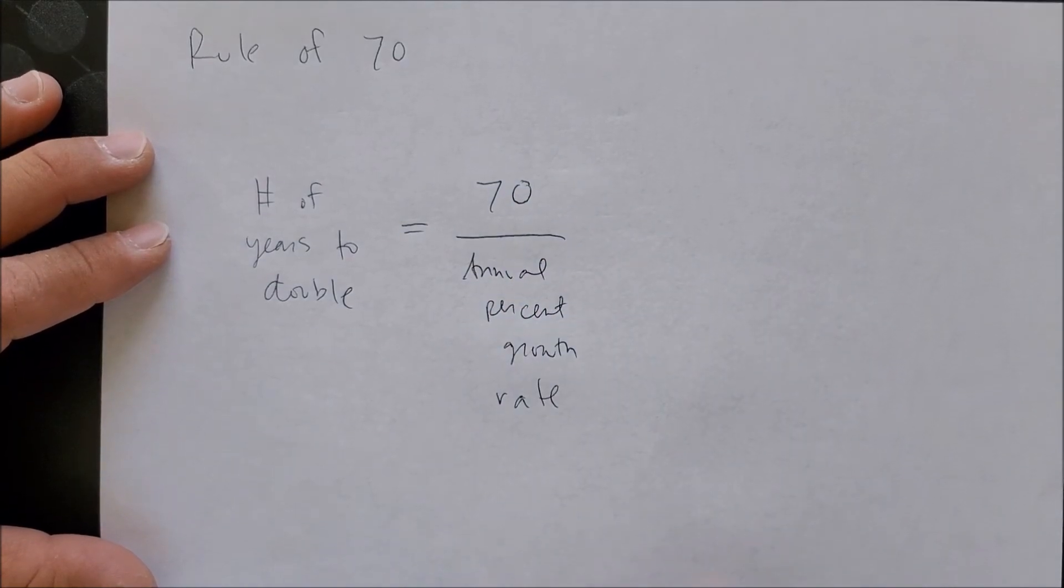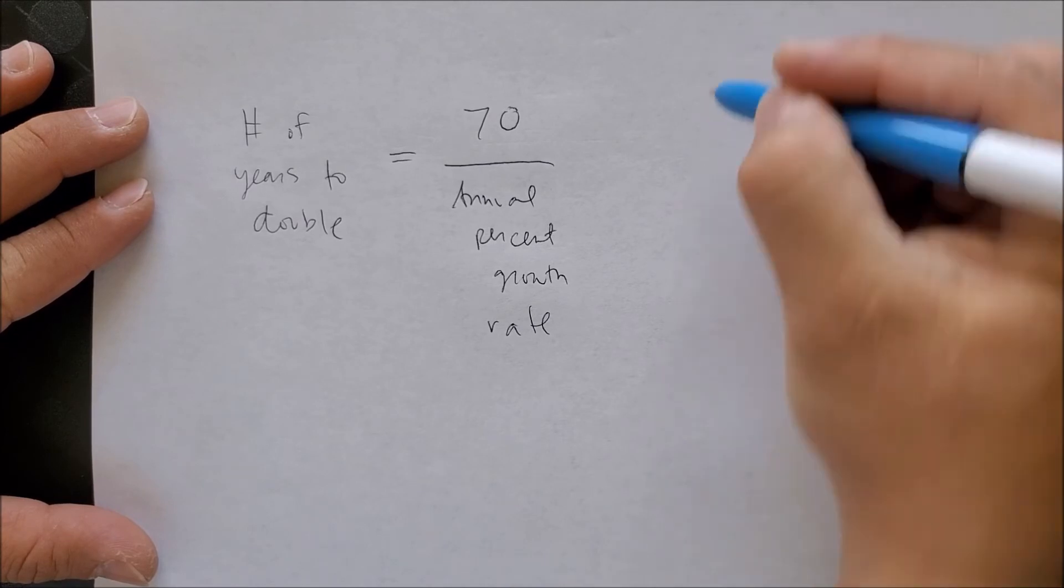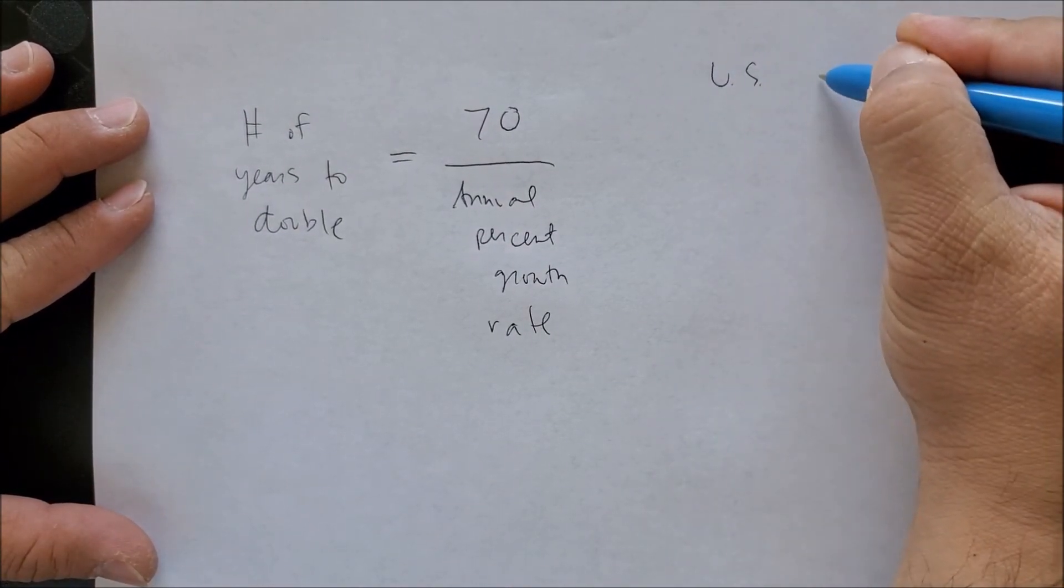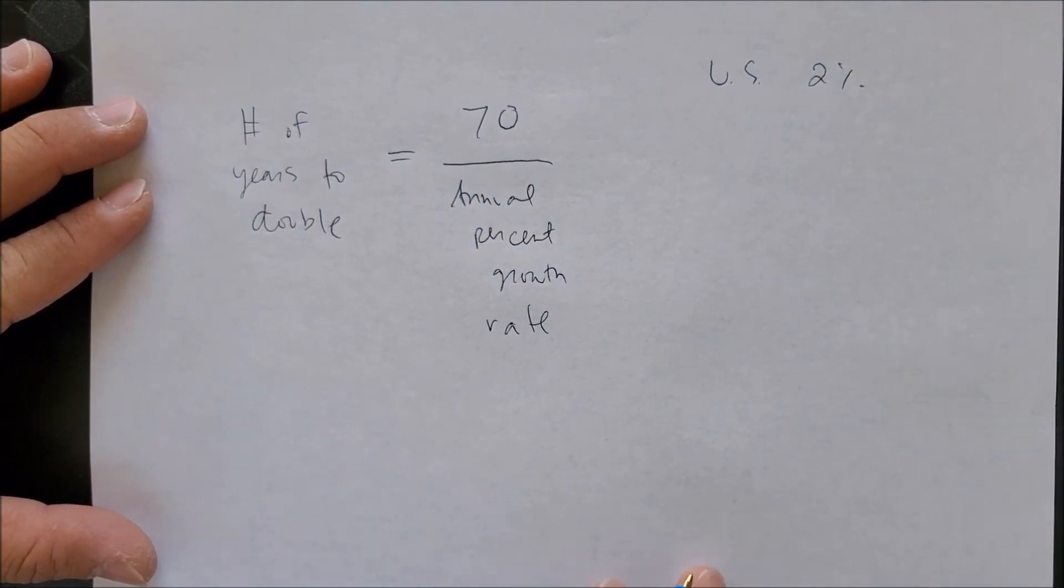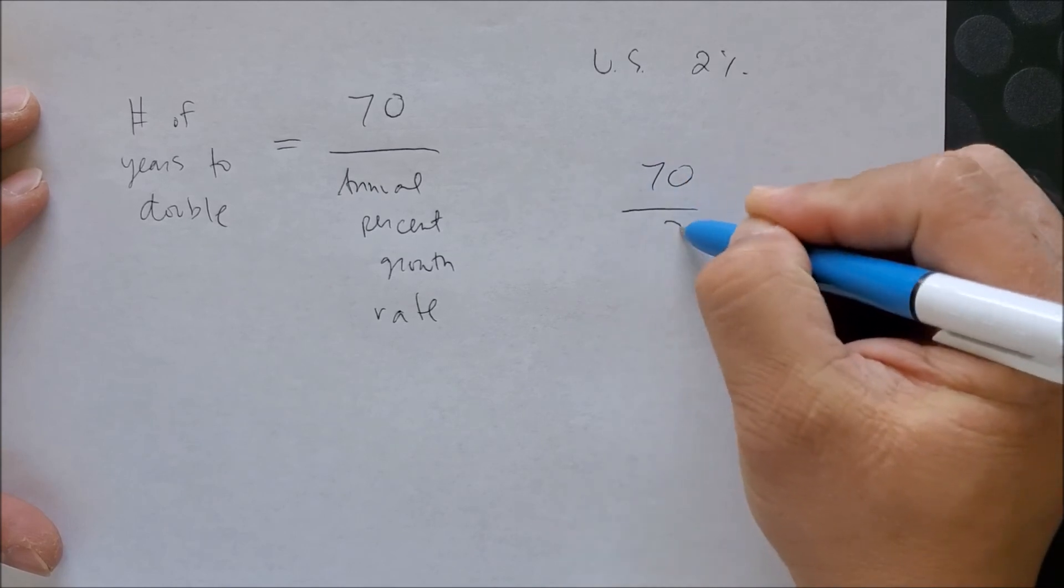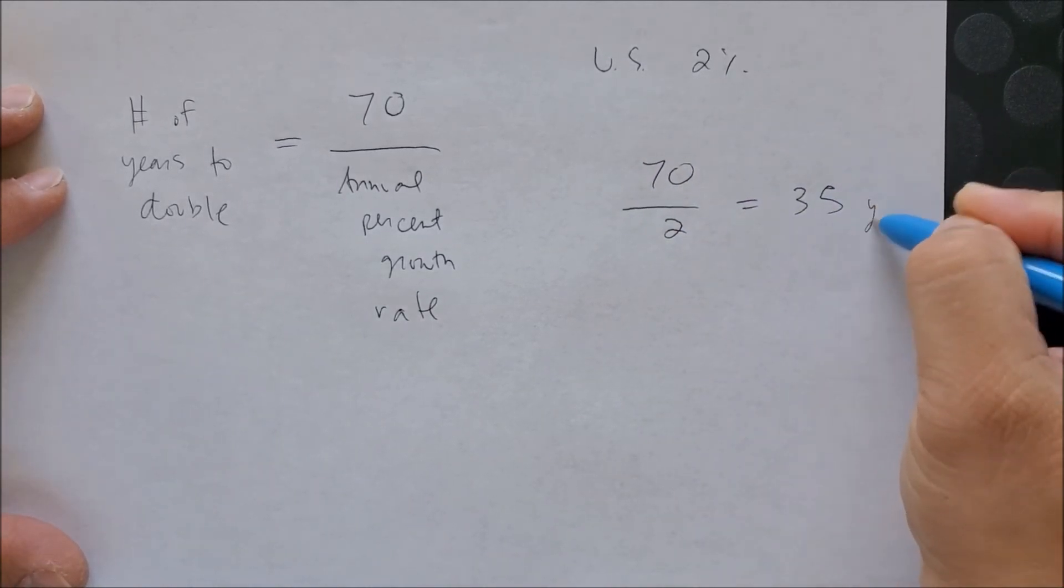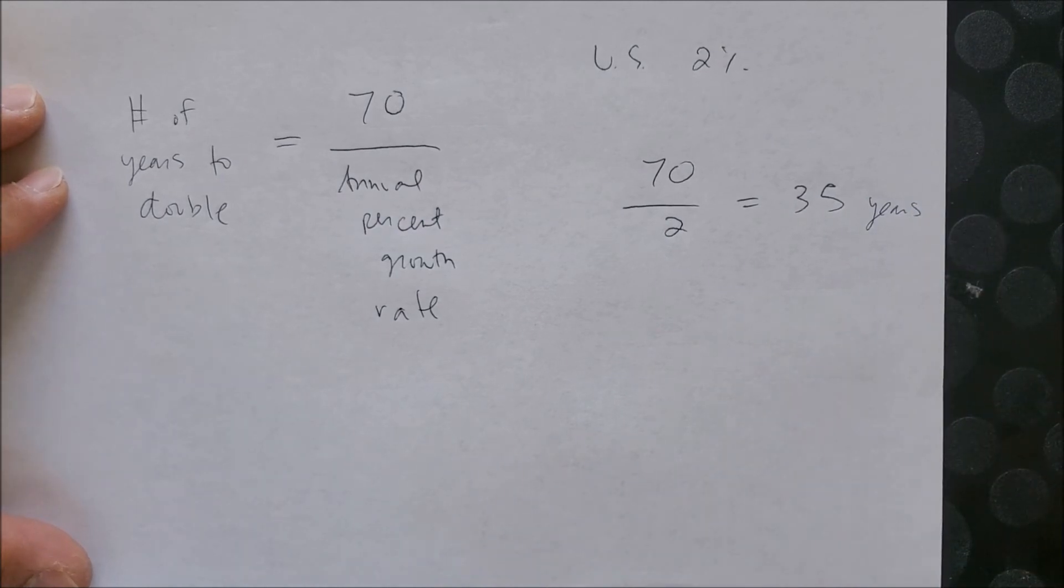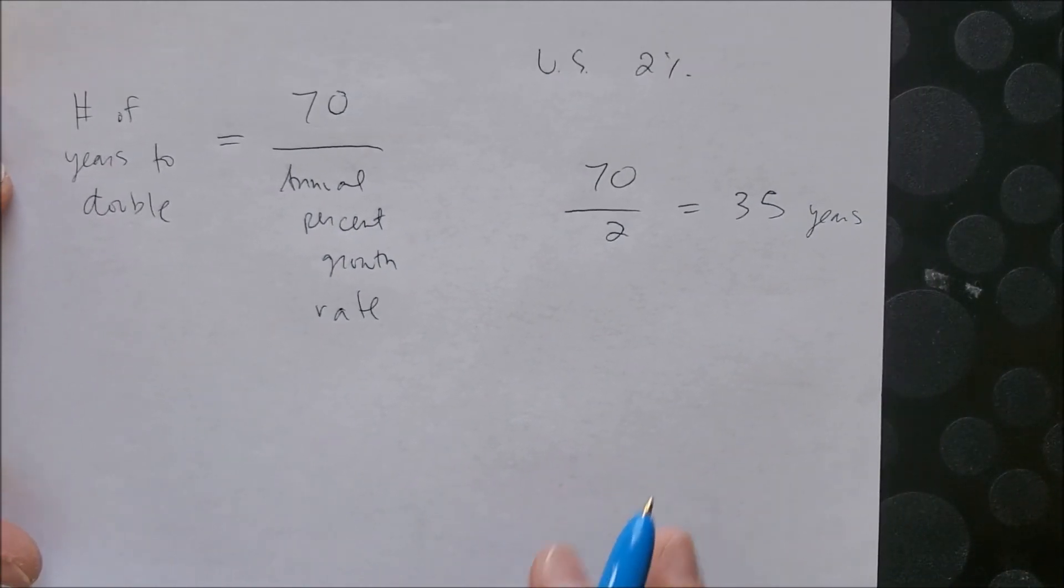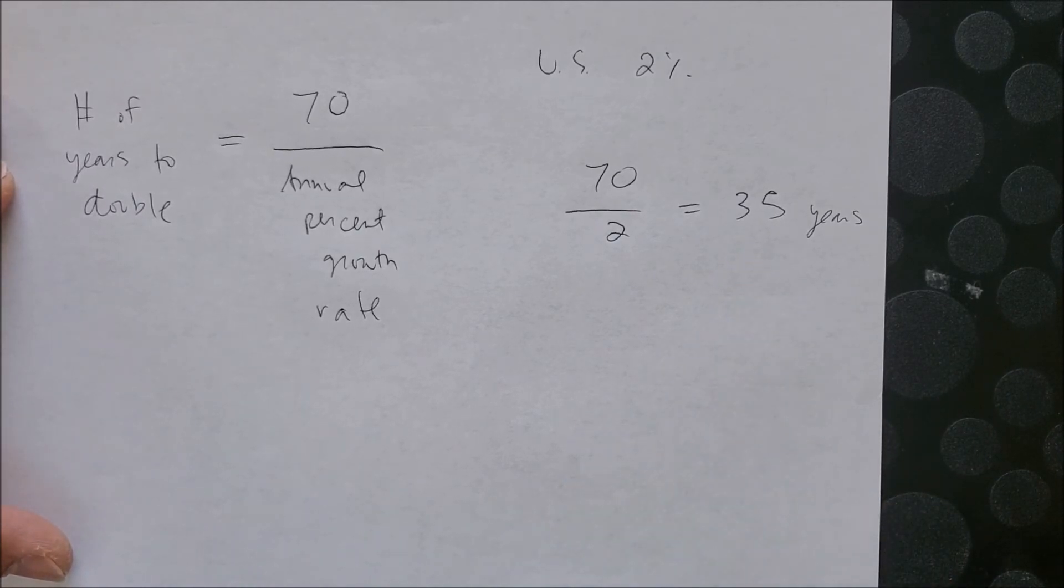So in the case of the United States, let's say that if the US is growing at a rate of 2% each year, we then plug in that 2% on the denominator and now have 70 over 2 to give us 35 years. And so we can now see that if the US wants to double its economy, it's going to take 35 years for it to take place.